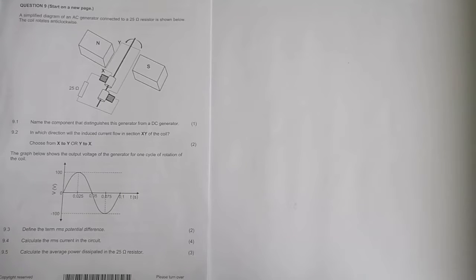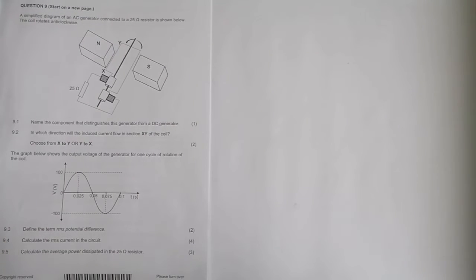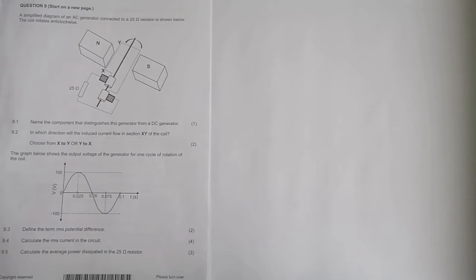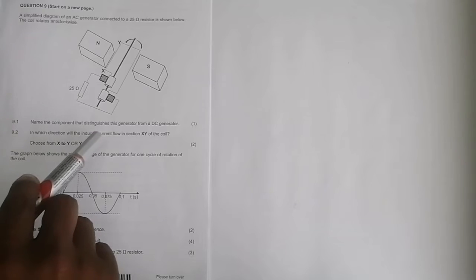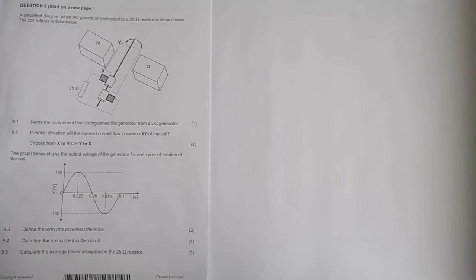We're looking at question nine. We've looked at the other questions based on electrostatics and electrodynamics - motors and generators. Let's get right into it. They say a simplified diagram of an AC generator connected to a 25 ohm resistor is shown below. The coil rotates anti-clockwise.